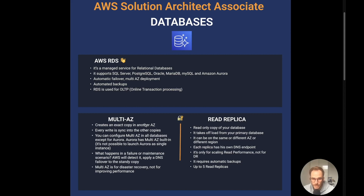You can configure multi-AZ on all databases except Aurora, because Aurora has multi-AZ built-in — it's not possible to launch an Aurora cluster without multi-AZ enabled. In a failure or maintenance scenario, AWS will detect it for you and apply a DNS failover to the standby copy. When you create a database with RDS, Amazon gives you a DNS URL to connect from your web server — not an IP address — so the DNS will automatically point to the copy in the other availability zone.